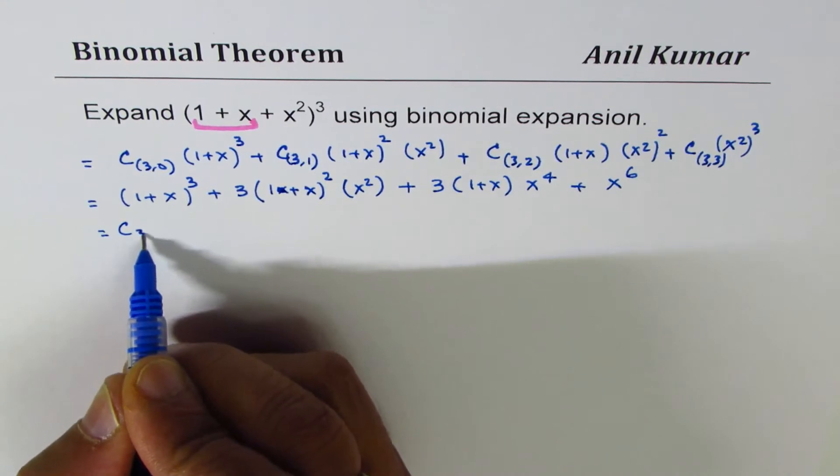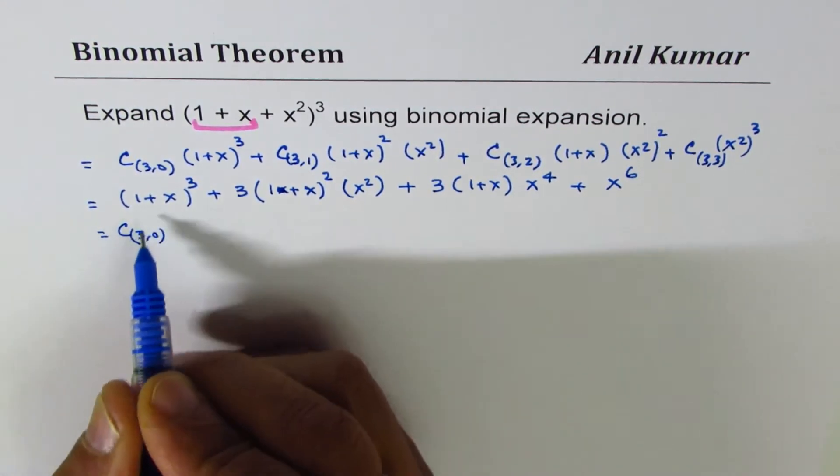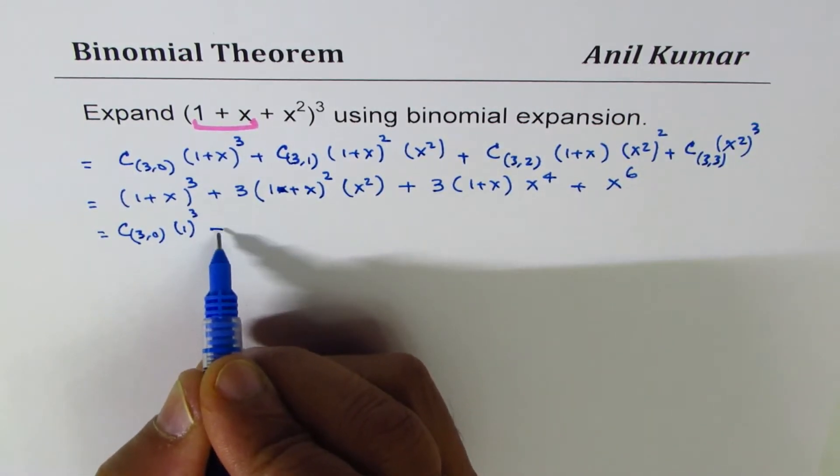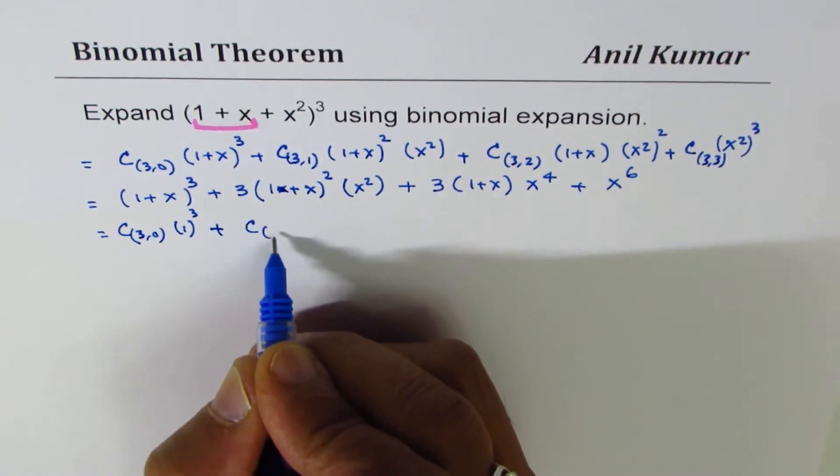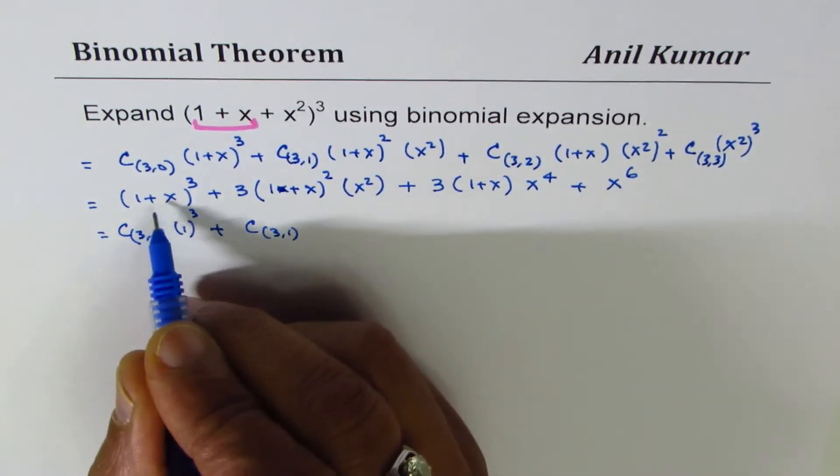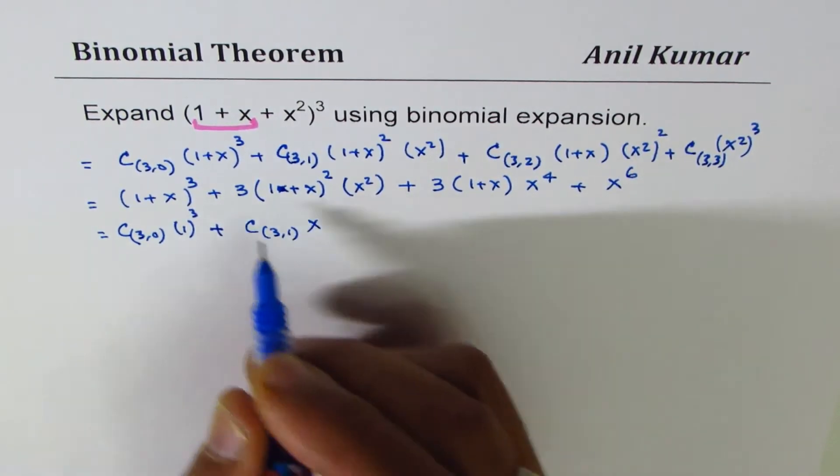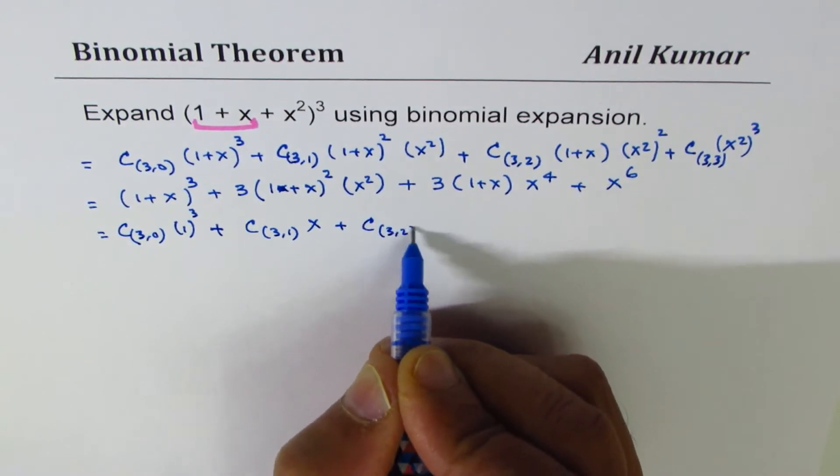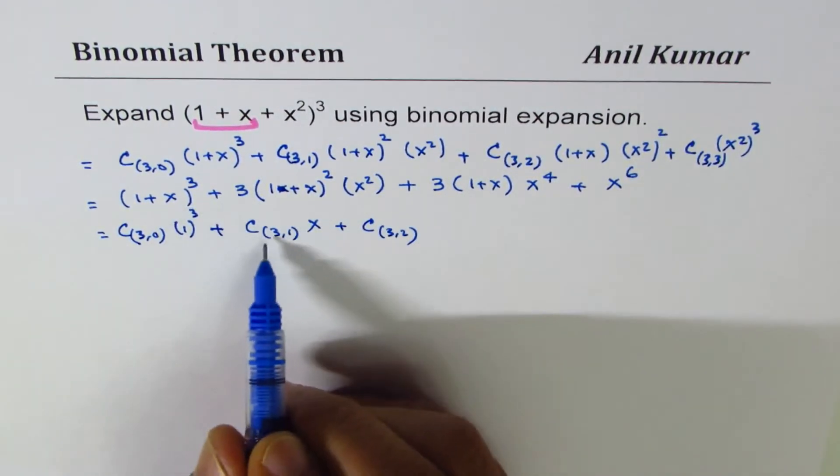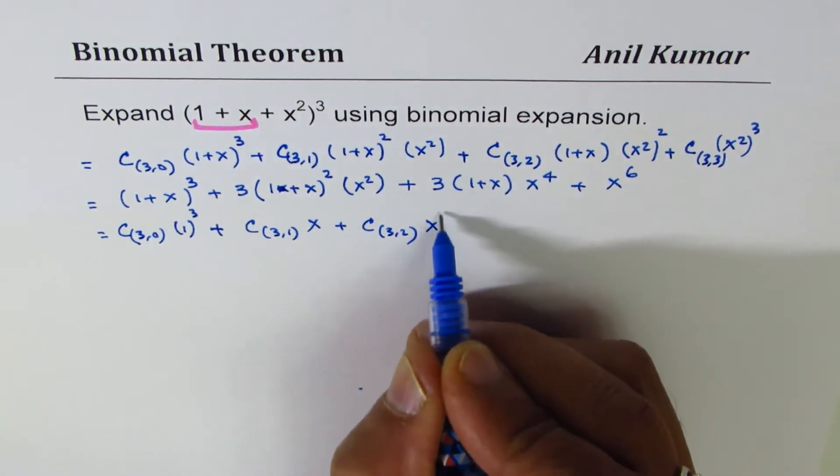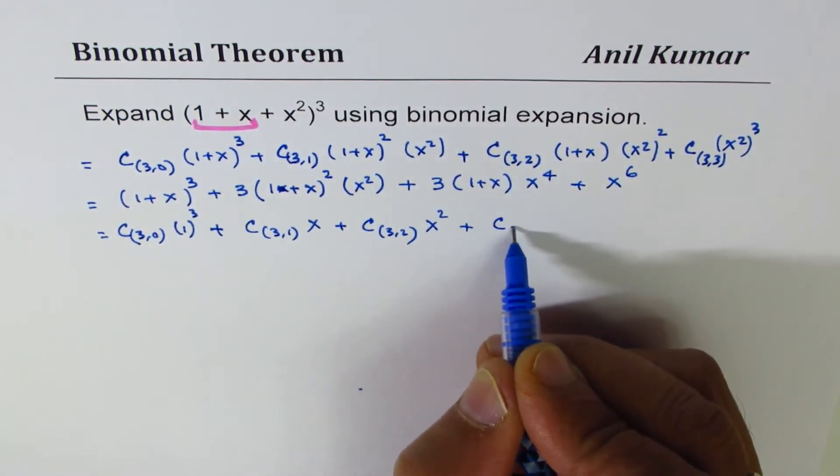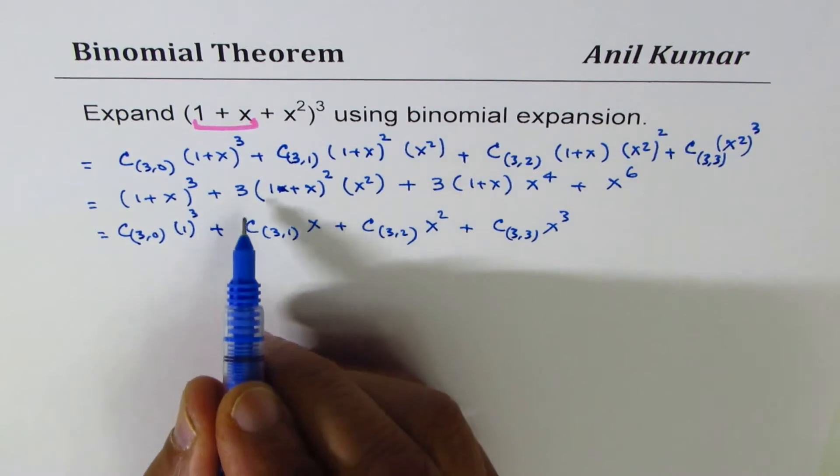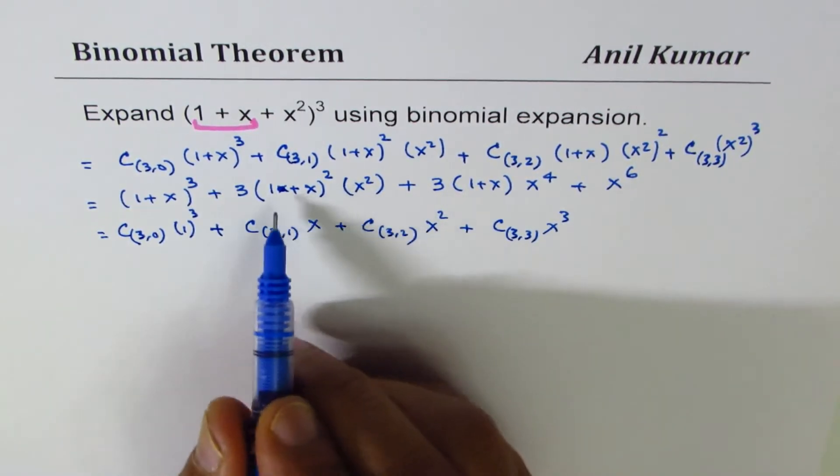Now you can apply the binomial theorem again to expand it. So we get C(3,0) times 1³ plus C(3,1)x plus C(3,2)x² plus C(3,3)x³.